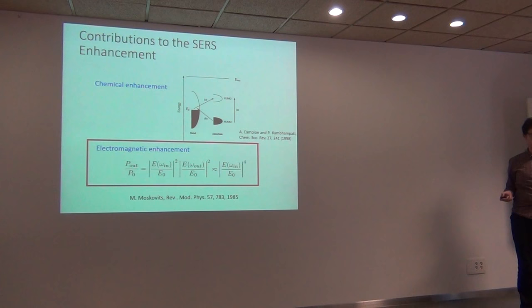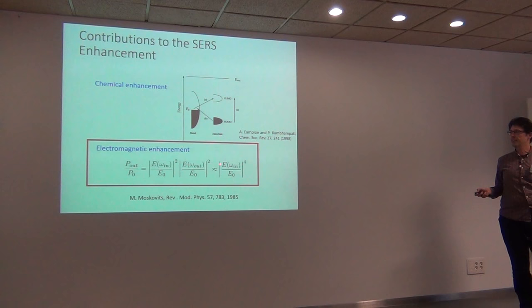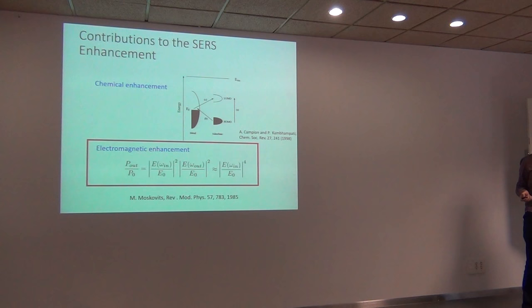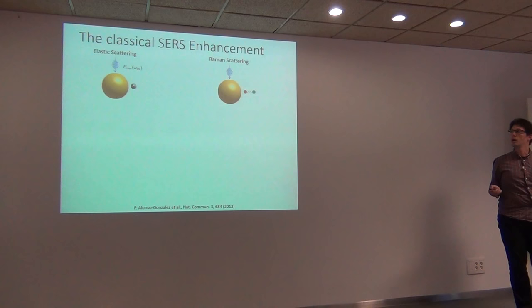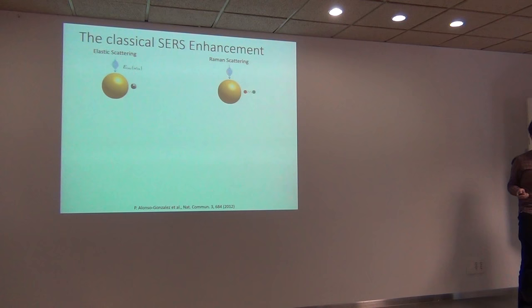If you know a bit more about SERS, you will know that this is not exact — in reality you have to take the square considering both the illumination frequency and emission frequency, which are different. Before expanding on this, I want to explain where this comes from, because not everyone actually knows. To emphasize that it's very simple, I'm going to compare Raman with a molecule in front of a plasmon, with just elastic scattering where the molecule is substituted by a small scatterer — say a small silicon sphere — just to show this is not specific to Raman.